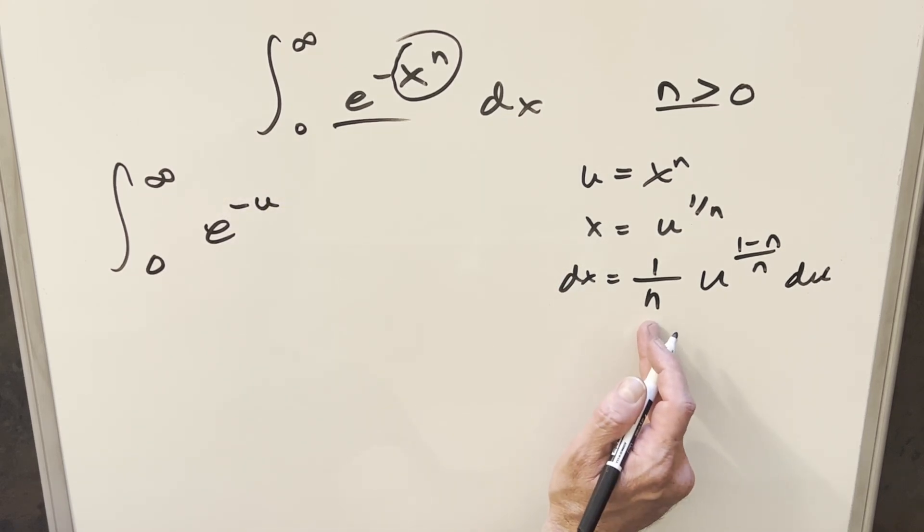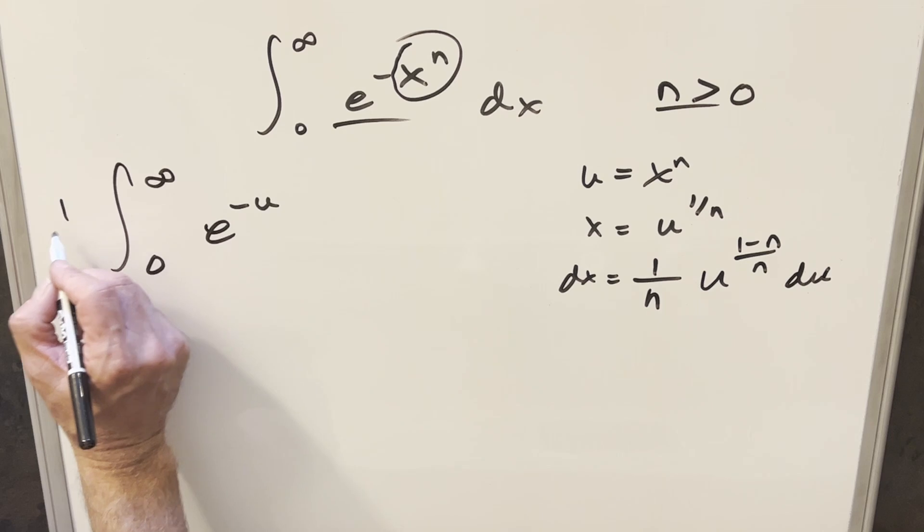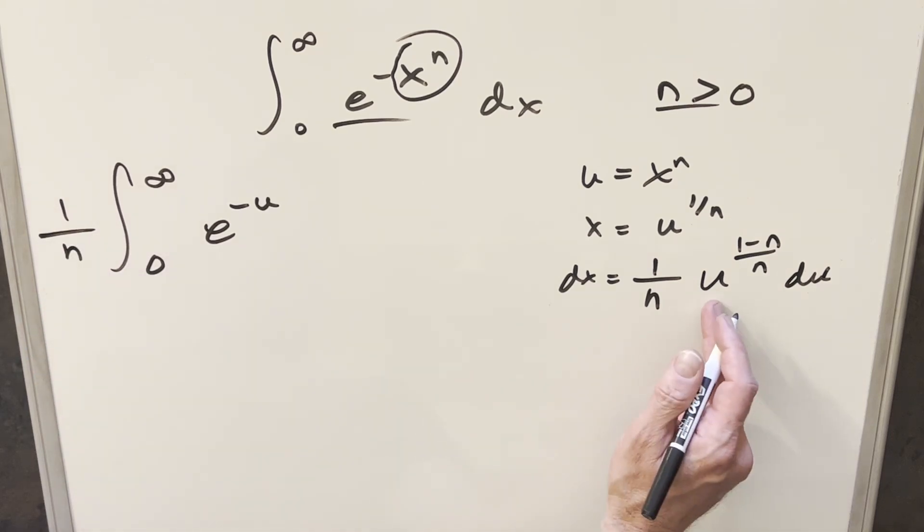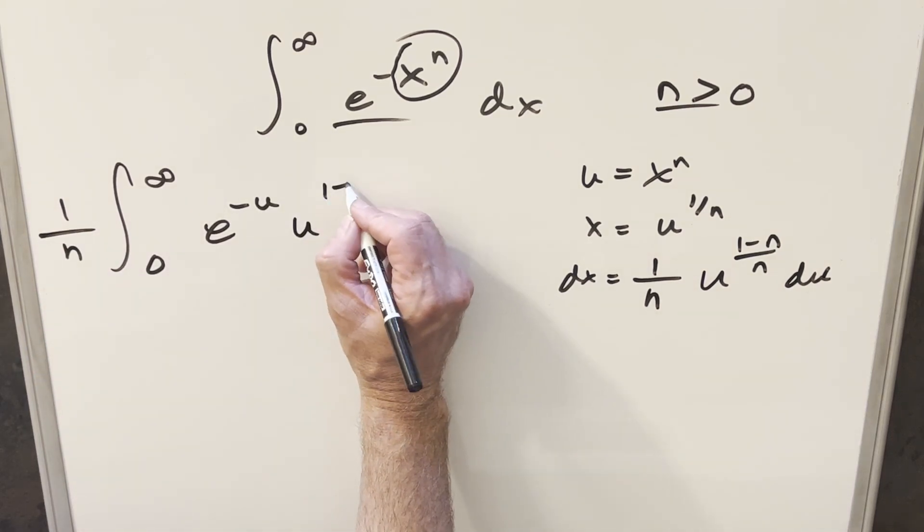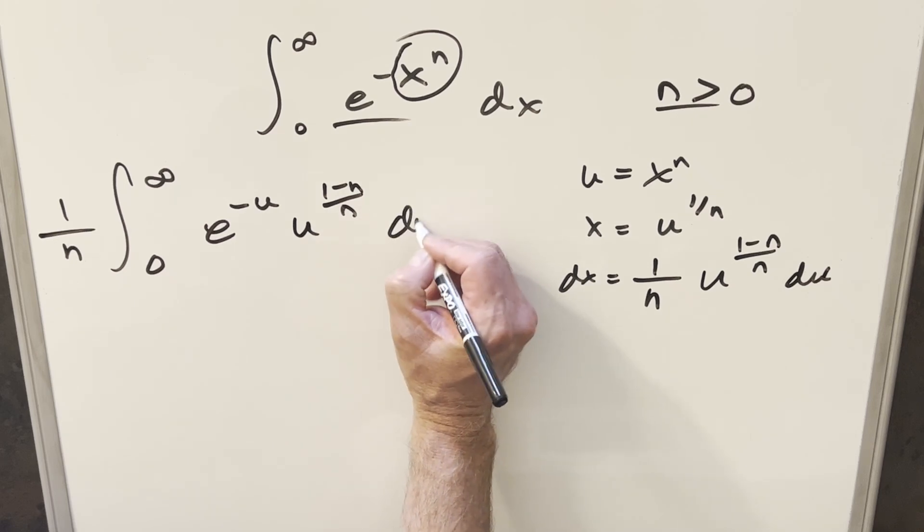Next we have our dx value. The 1 over n is a constant, so let's bring that out front of the integral. For the rest of it, we have u^((1-n)/n) du.